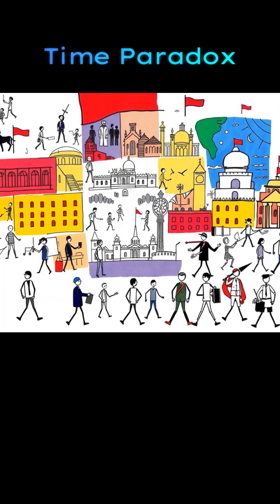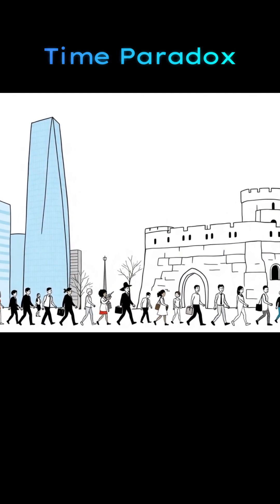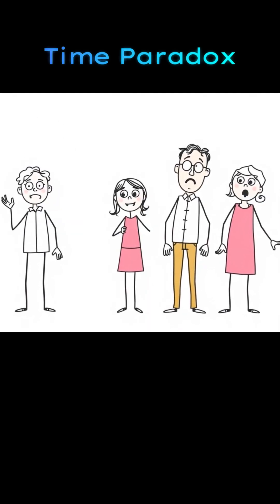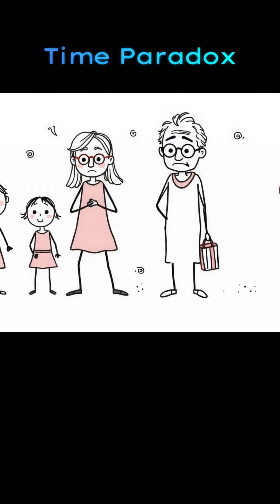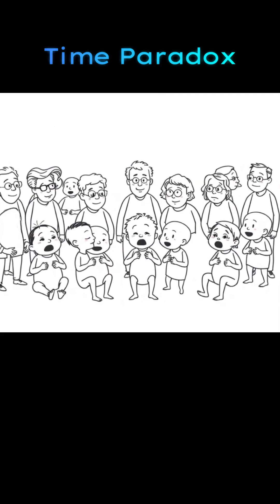Centuries overlap in broken fragments. Dinosaurs walk through modern cities. Skyscrapers rise beside medieval castles. People age forward and backward in seconds. Children become old, then vanish into dust. Grandparents turn into infants before collapsing.